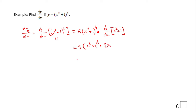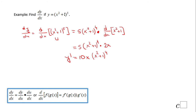The derivative of x squared plus one is nothing else than 2x. The last step is to simplify and rearrange this expression. In this case we get 10x times the quantity (x² + 1) to the fourth power. This is y prime, or dy/dx, and as I said, I used this chain rule form shown here.